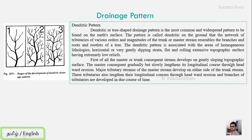In the development of a dendritic pattern: first, the master or trunk consequent stream develops on a gentle sloping topographic surface. The master consequent gradually lengthens its longitudinal course through headward erosion. Major tributary streams develop on either side of the trunk stream, and these tributaries also lengthen through headward erosion, with branches of tributaries developing over time. The dendritic pattern is associated with gently dipping topography and homogeneous lithology.